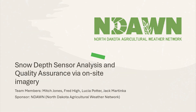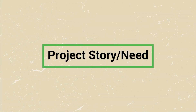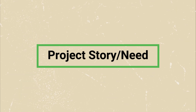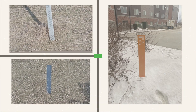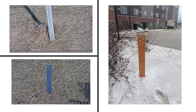First, we will discuss our project's story and the need. NDAWN provides weather information in the North Dakota region and is particularly focused on agriculture, as weather patterns are crucial when it comes to farming various crops. Additionally, accurate snow depth measurements help to better predict annual flooding come springtime. The need for our project comes from wanting to know snow depths at NDAWN stations, of which there are over 150.